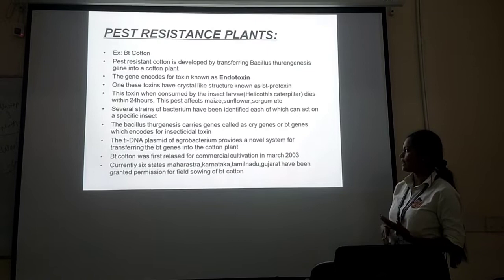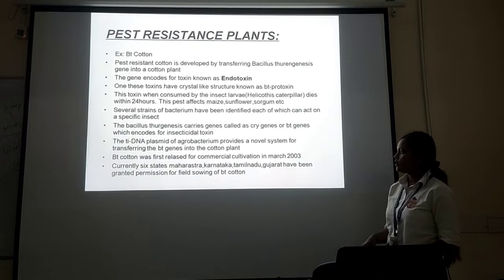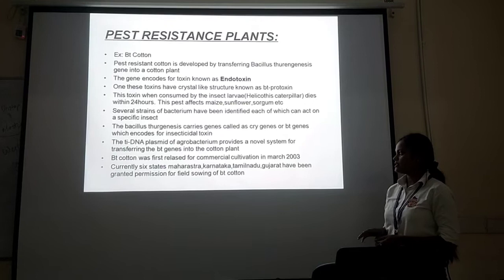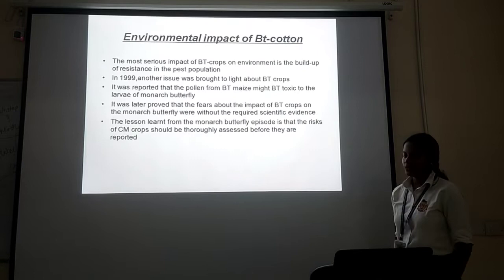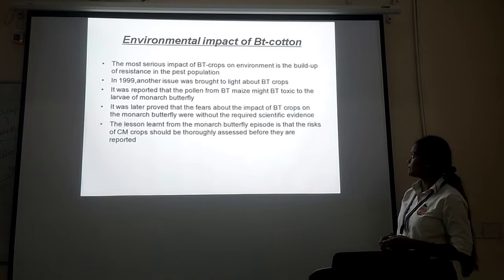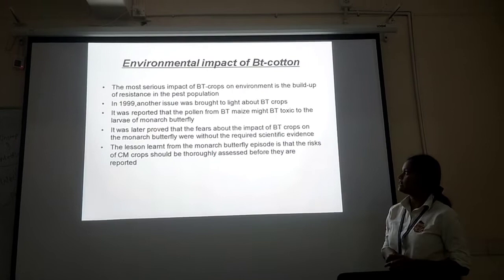The Bacillus thuringiensis strains carry genes called cry genes, which encode the insecticidal toxin. The Ti-plasmid has been used as a mobile system for transferring the Bt gene. Bt cotton plant was first released for commercial cultivation in March 2003. In six states — Maharashtra, and others — permission was granted for commercial sowing of Bt cotton. The most serious impact of Bt crops on the environment is the result of its effects on the pest population.